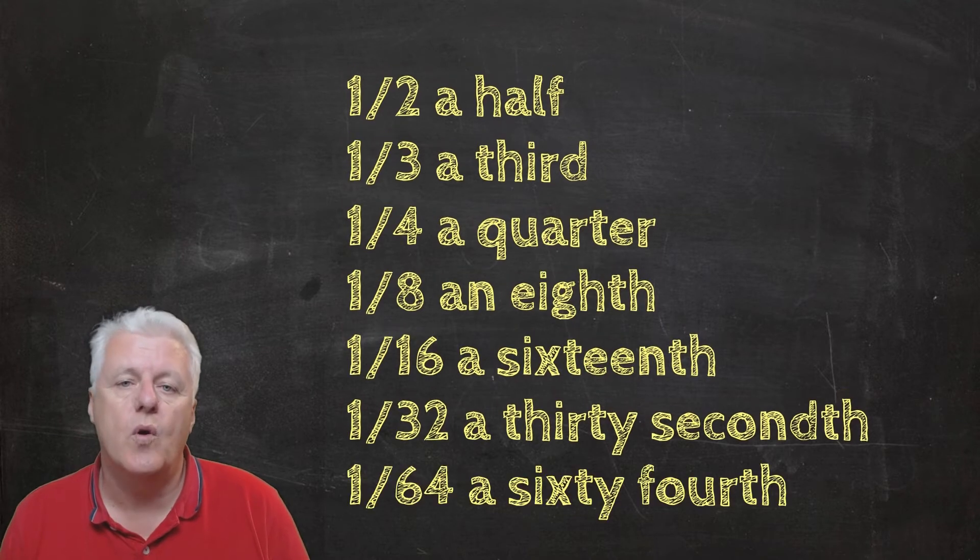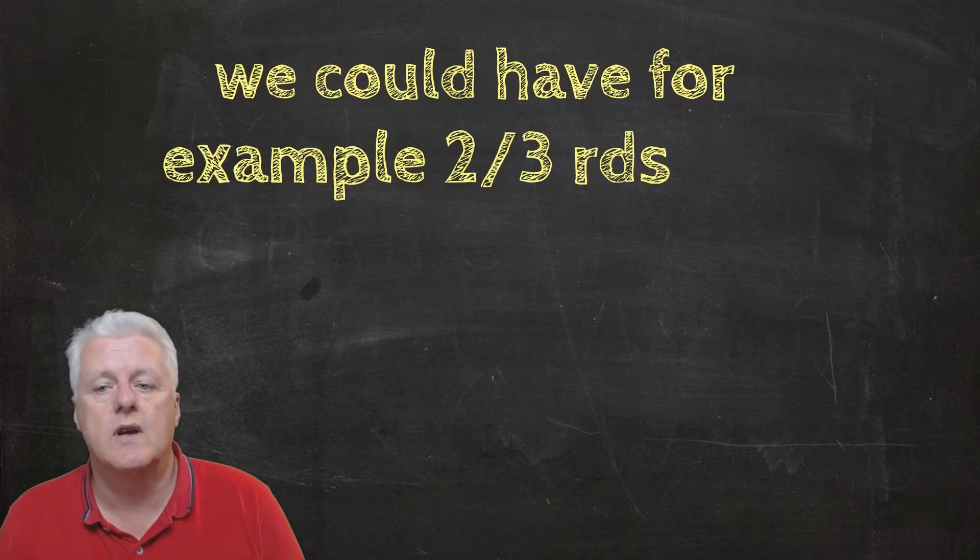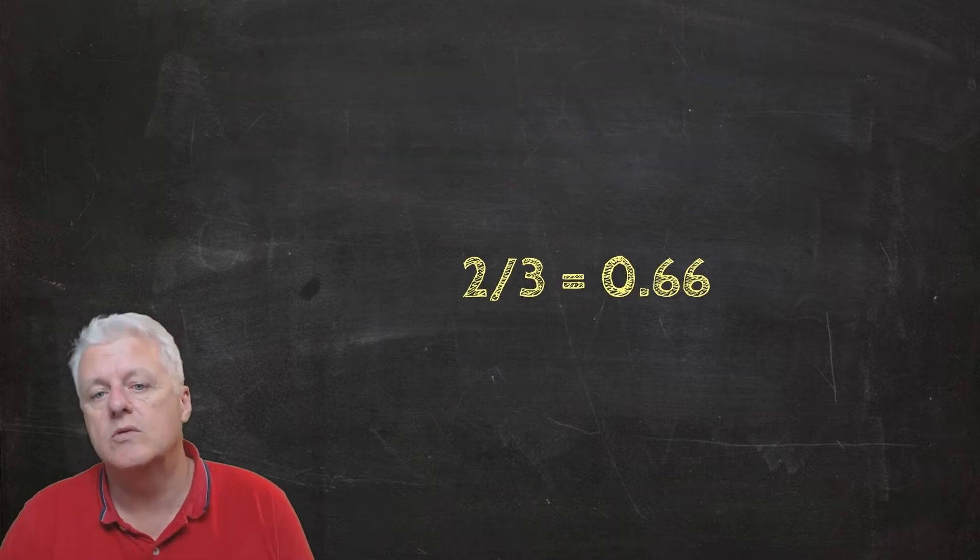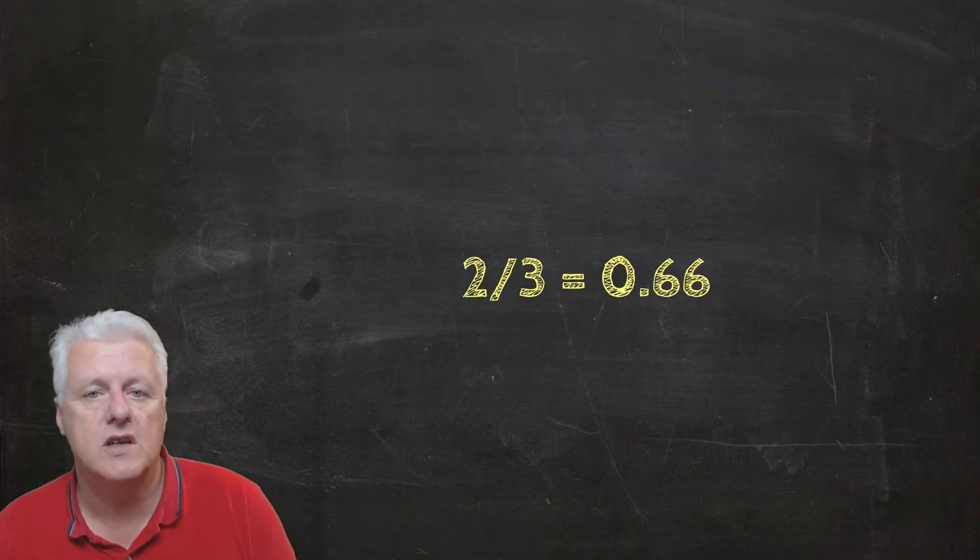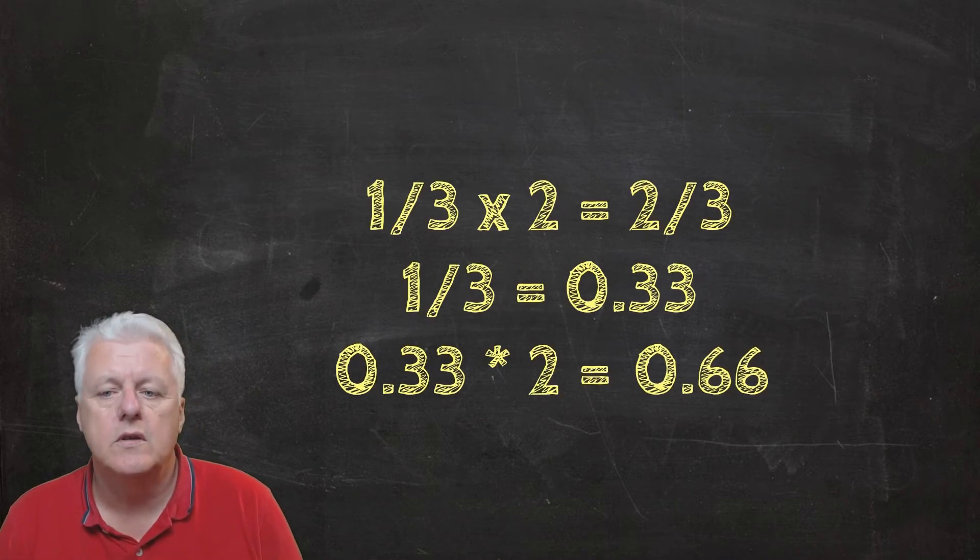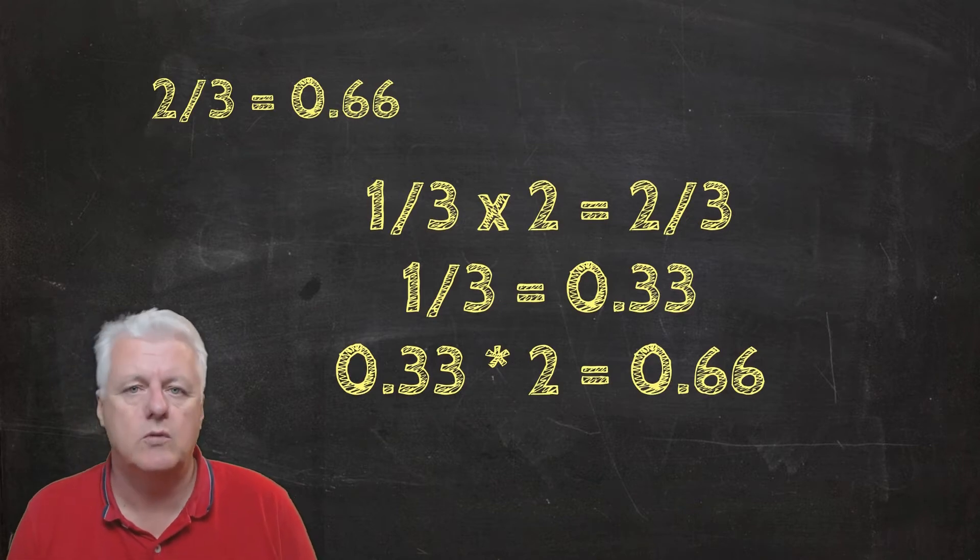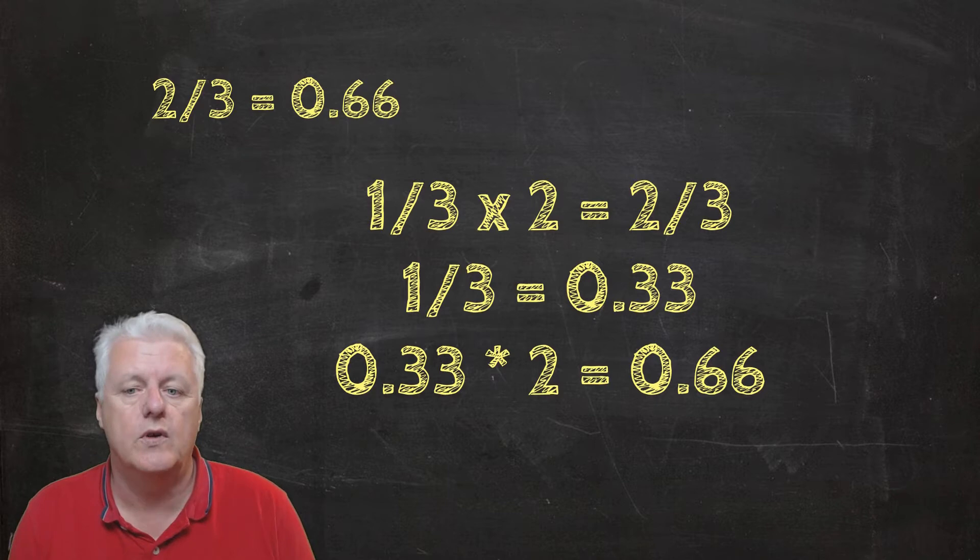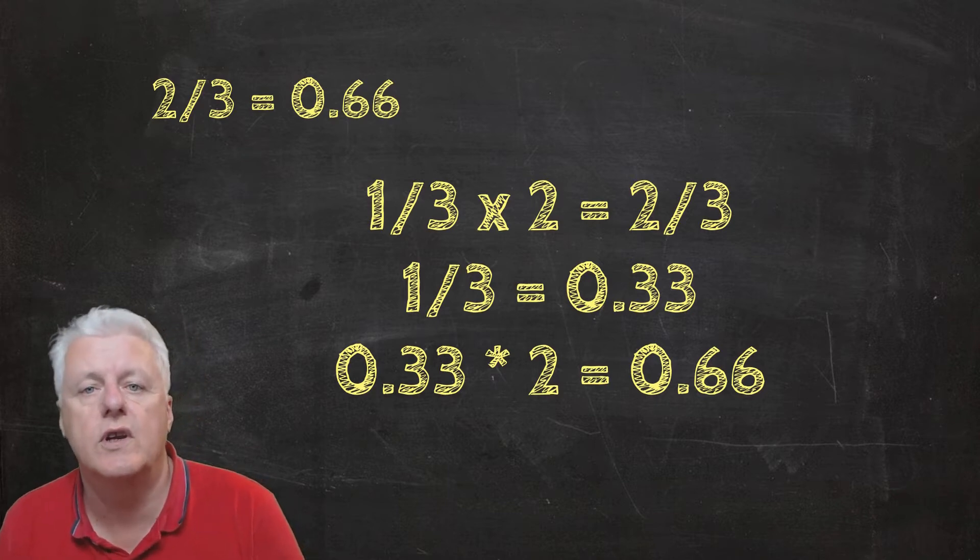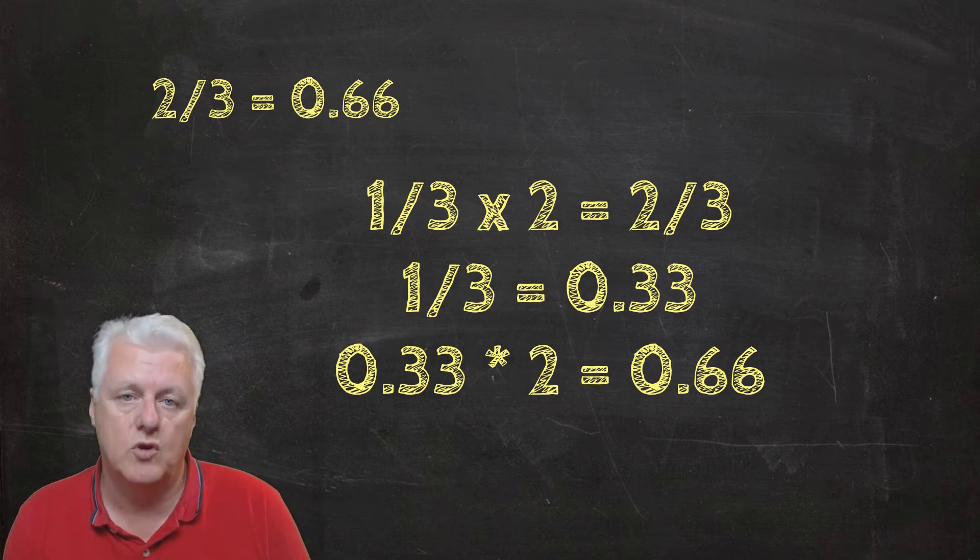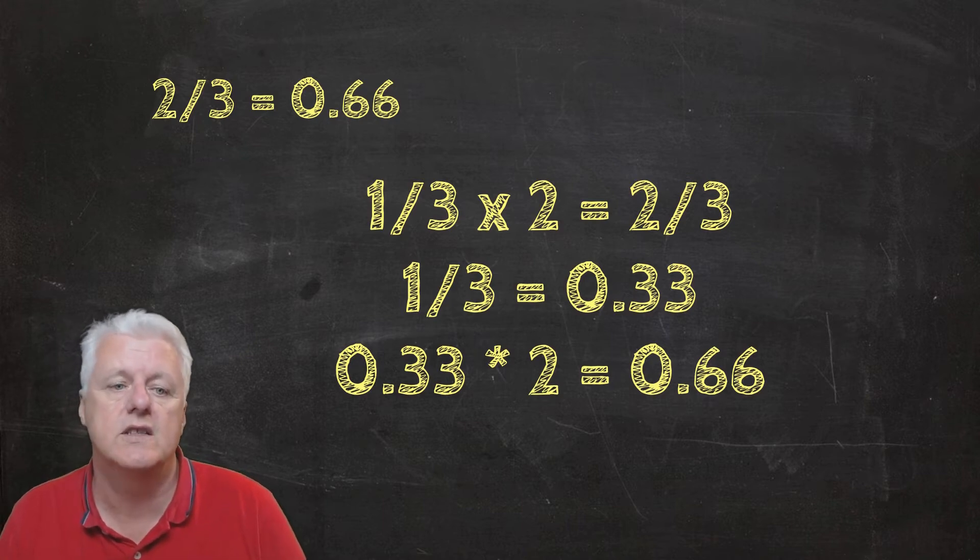We could have, for example, two thirds. Two thirds equals 0.66 as a decimal. How? Well, one third times or multiplied by 2 equals two thirds. So one third equals 0.33, so 0.33 times 2 equals 0.66.